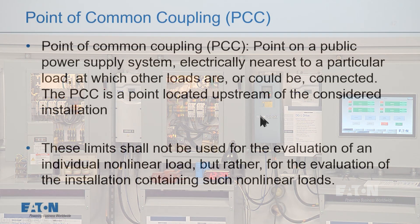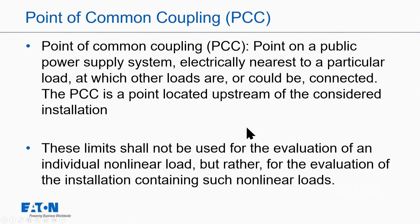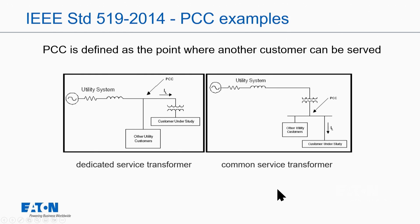Let's take a look at a couple slides. The PCC on a public power system is really the point where that load — or you as a load — from the utility perspective, are or could be connected. When we have multiple people at the secondary or primary of a transformer, the transformer is not necessarily relevant; it's where you could be connected. Importantly, per IEEE 519, these limits should not be used for the evaluation of an individual nonlinear load, but rather the evaluation of the installation containing such nonlinear loads — meaning the overall system effect, not just one load.